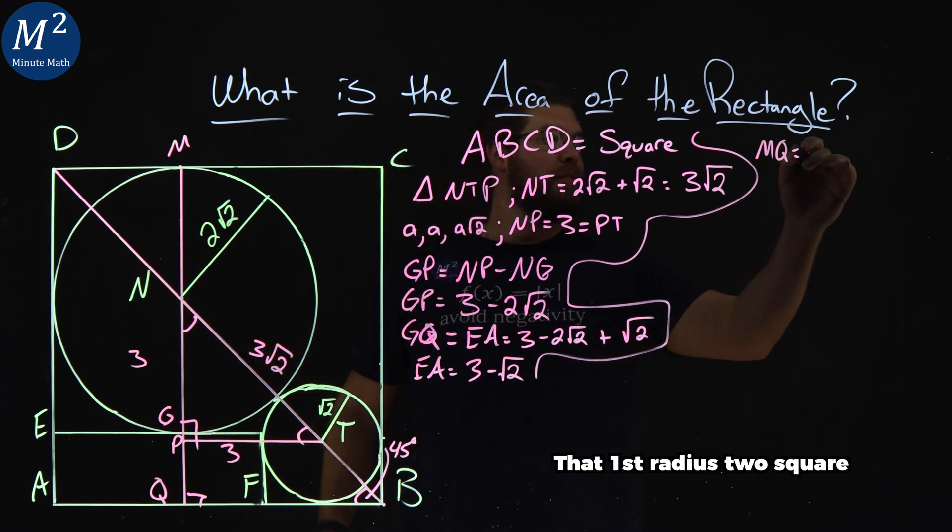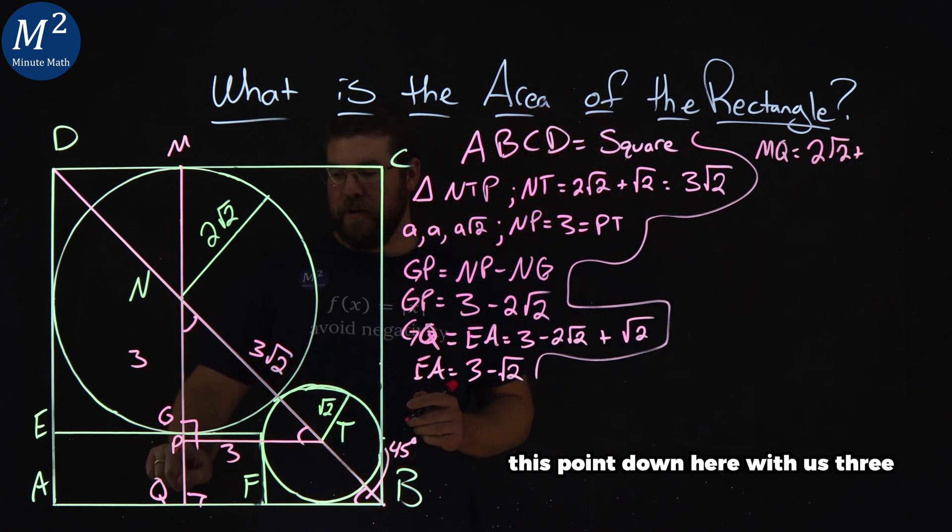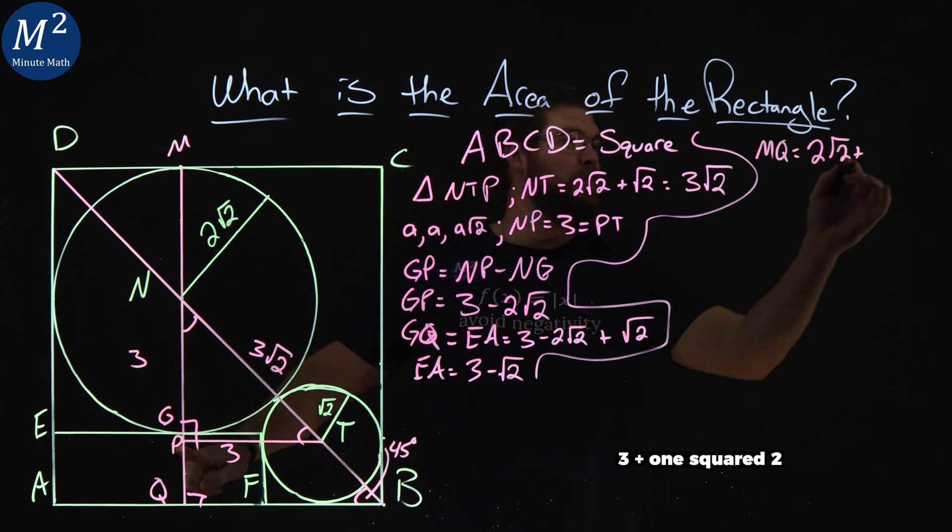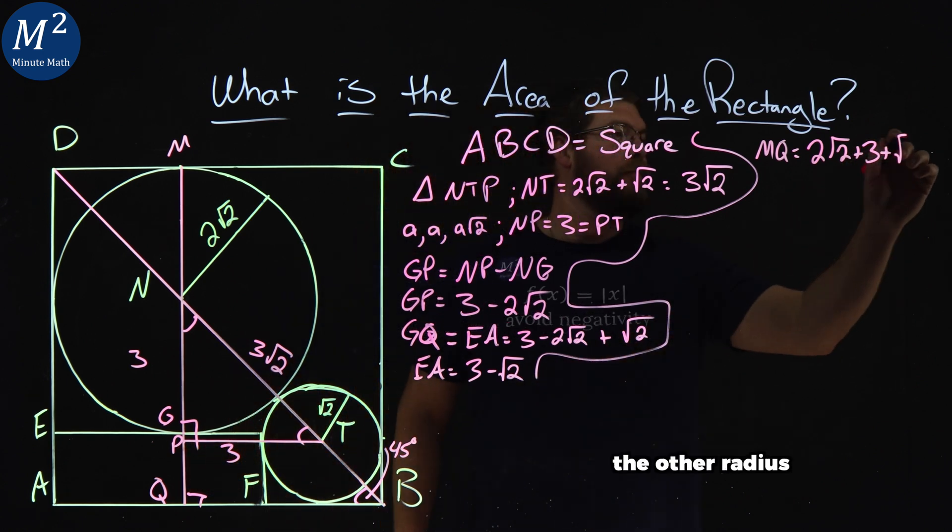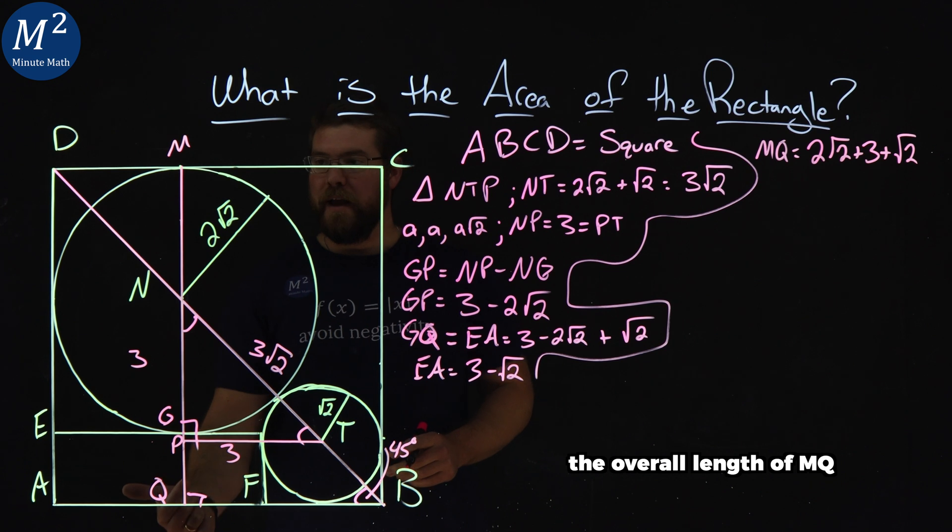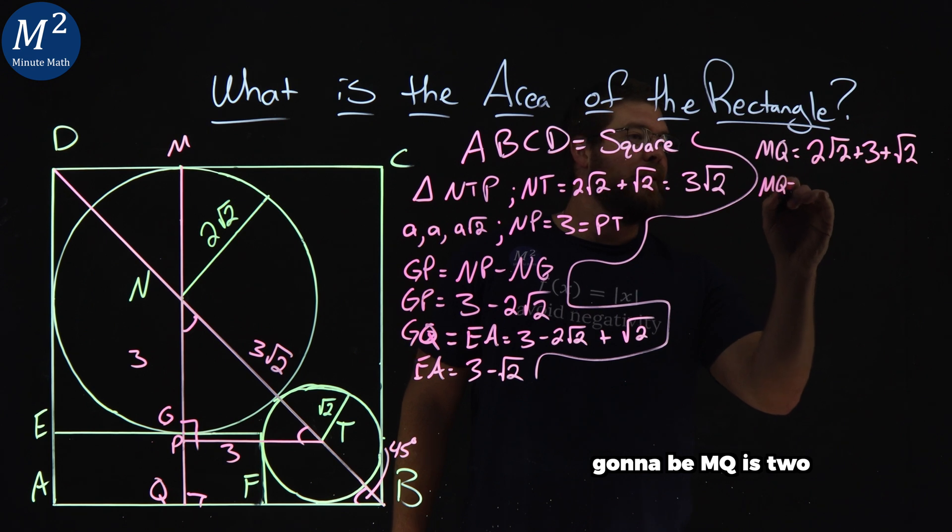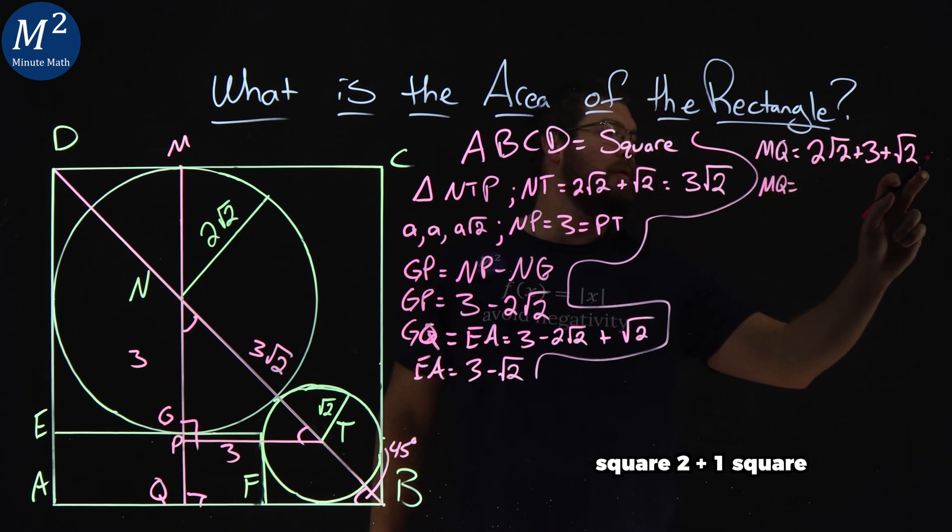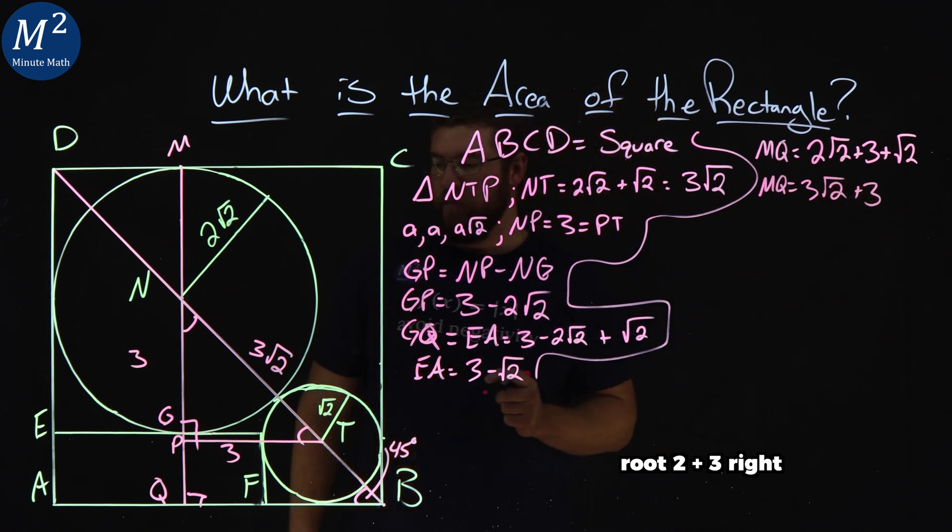2√2, that first radius, 2√2, plus here, from this point down here, we said was 3 to P, NP, which is 3, plus √2, the other radius. And that's going to be the overall length of MQ. Simplifying that up is going to be MQ is 2√2 + √2 is 3√2 + 3, right there.